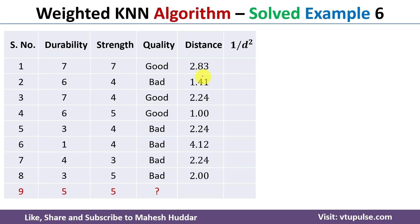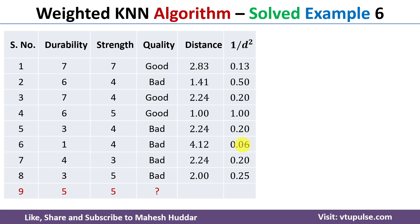Now we consider the weighted KNN algorithm. We use the same distances calculated previously. Next, we calculate the inverse square distance: 1 / (distance²). For example, 1 / (2.83²) = 0.13. We calculate this for all training examples.